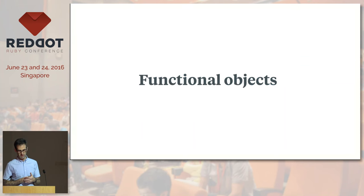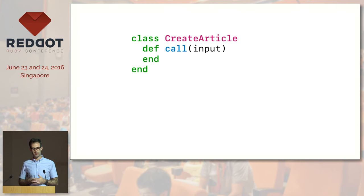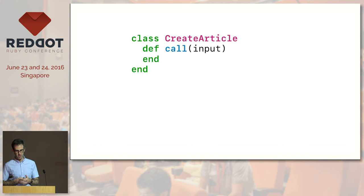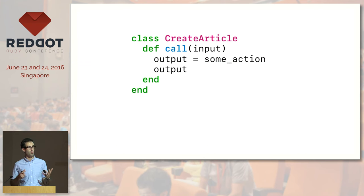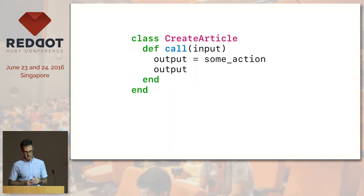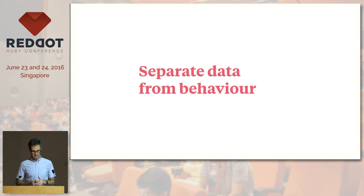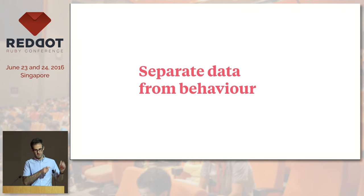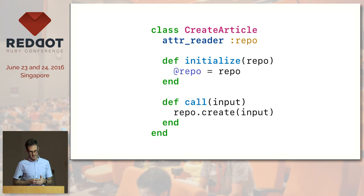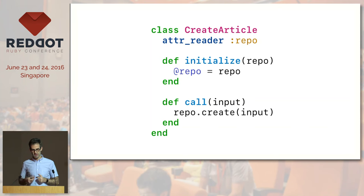And we can satisfy all of these criteria by building functional objects in Ruby. Let's take a look at one now. This is the simplest possible functional object. It's a class with a call method, just like Ruby's own procs and lambdas. That call method accepts an input and returns an output. That's it. It doesn't mutate the object's state, and it shouldn't mutate the input data either. Functional objects in this way make a clear separation between data and behaviour.